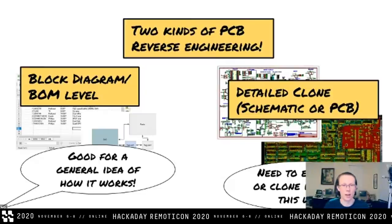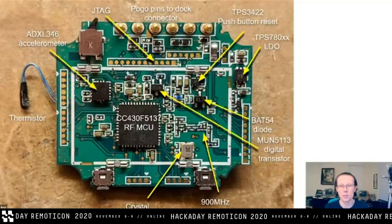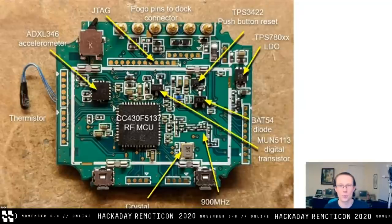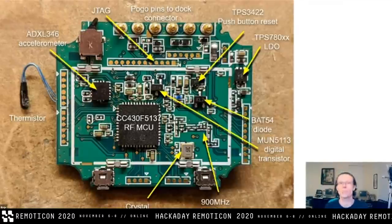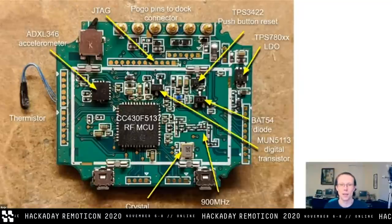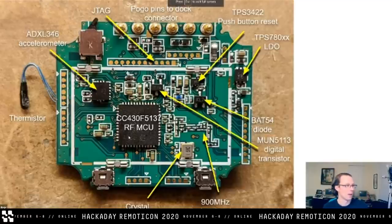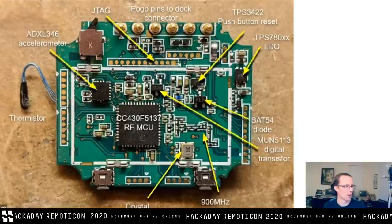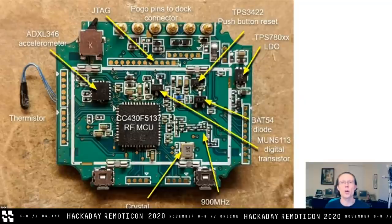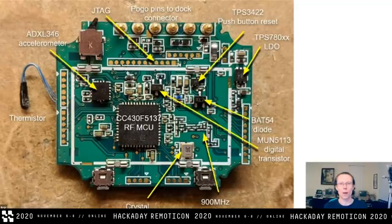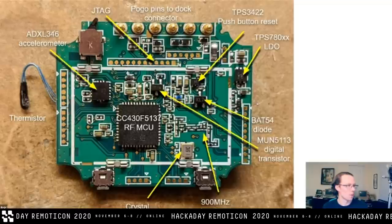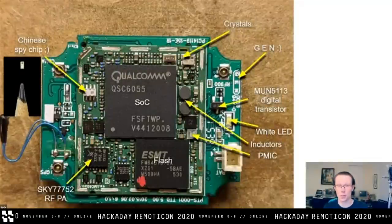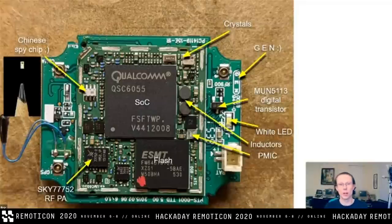Here's a quick example of block diagram level reverse engineering: a device called a Whistle Pet Tracker. A pile of these wound up at the local surplus store and I bought one because it was cheap and I was curious. I took pictures of the board and identified as many components as I could. You can see there's an RF microcontroller, an accelerometer, a diode, and some other parts. I don't have any connectivity information — no netlist, no schematic — but I can still learn quite a bit about how the device works just by understanding what devices are on the board.